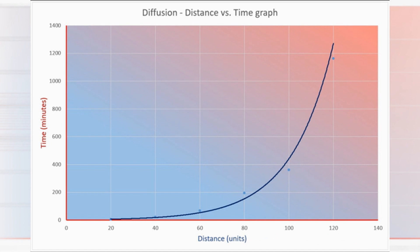This distance time graph shows the relationship between distance travelled by the acid particles and the time it takes. As the distance increases, the time increases exponentially.